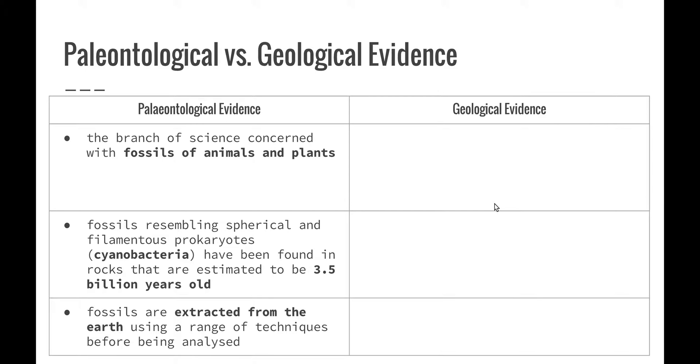So fossils are extracted from the earth using a range of techniques before they're able to be analyzed. So the removal of the fossils is done by a group of paleontologists who then study the fossils. They usually extract them by creating an archaeological dig where the bones or the imprints are removed quite carefully to make sure that they're not damaged and they're able to be looked at.